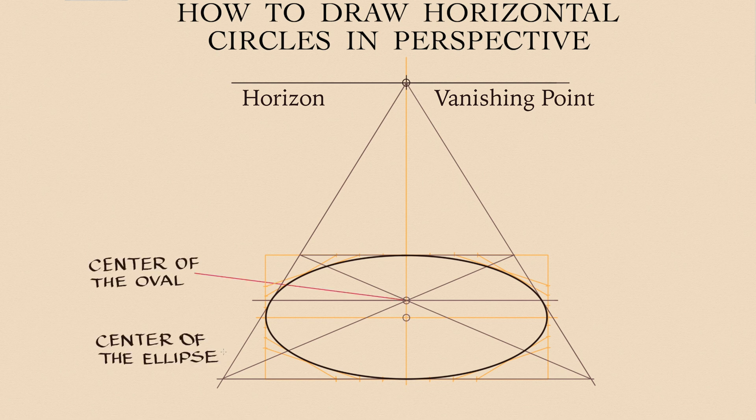Although it is the same elliptical shape, the oval's center is different from the ellipse's center.